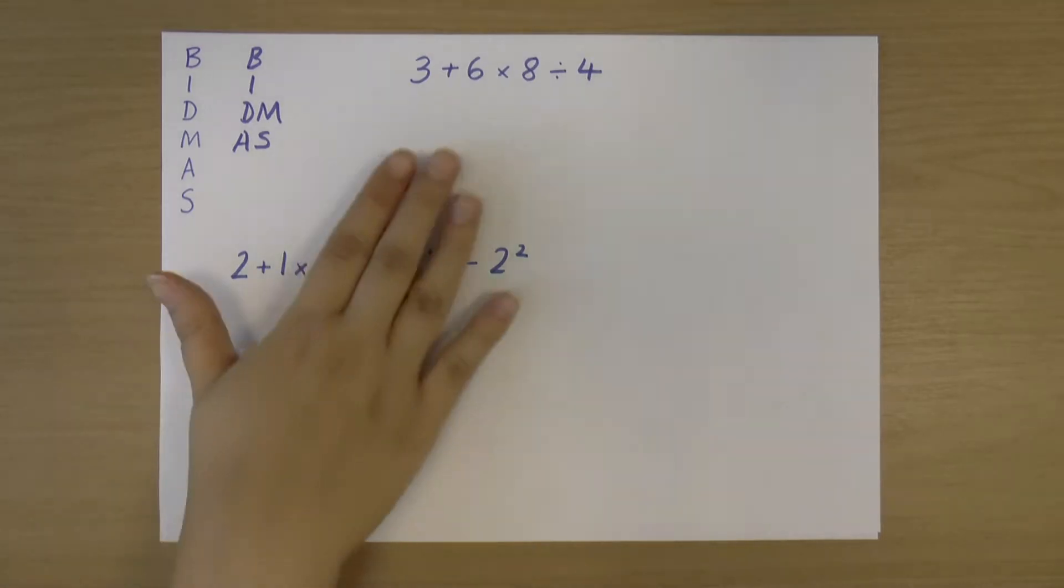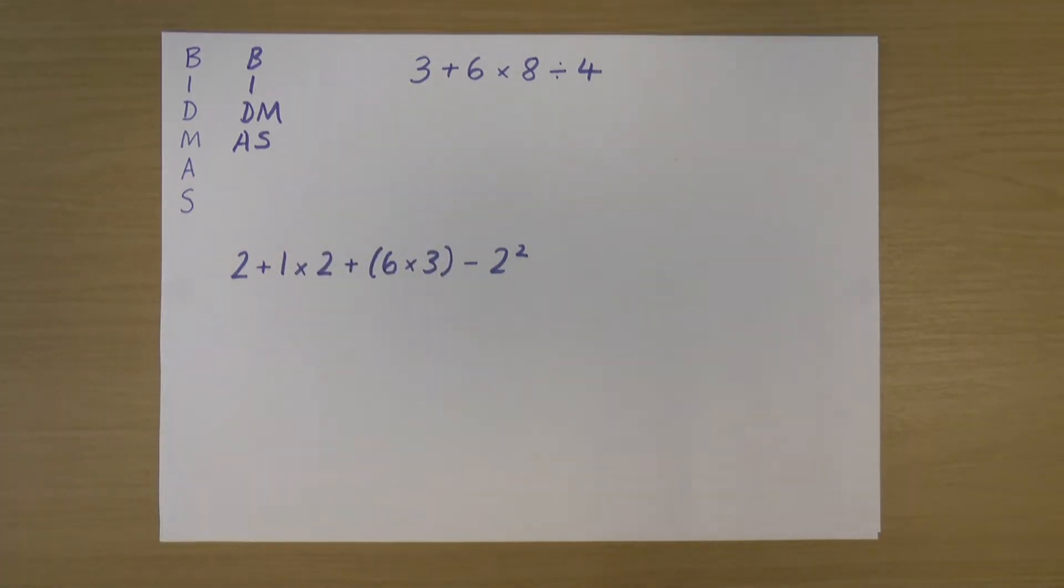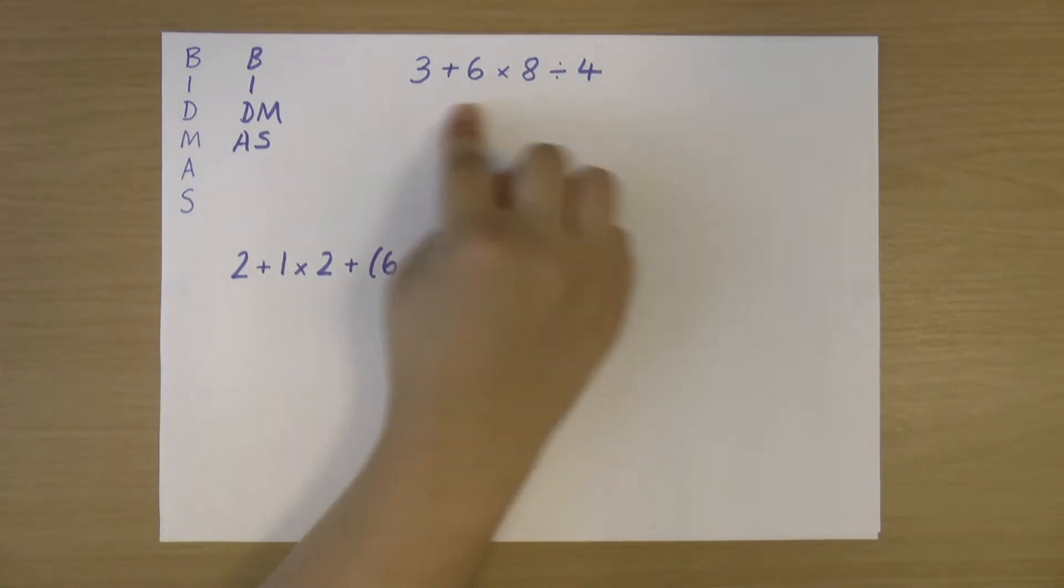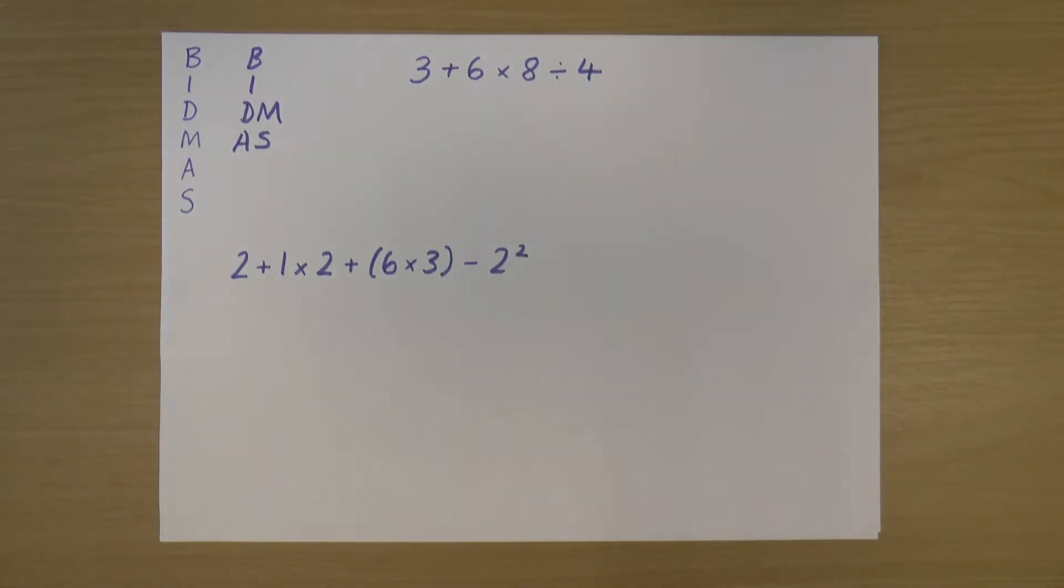Okay, so let's have a go at doing some of these sums. Let's start with this one at the top. We've got 3 + 6 × 8 ÷ 4. The first thing I need to do is go through my BIDMAS and see what I've got. Do I have any brackets? No, I don't. Do I have any indices? No, I don't.